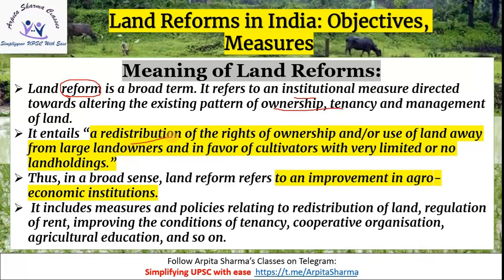Land reform entails redistribution — transferring ownership rights from large landowners who hold excessive land, in favour of cultivators with limited or no land holdings. Those who had more land would have it redistributed to cultivators who had very little or no land. This was the essence of land reform.